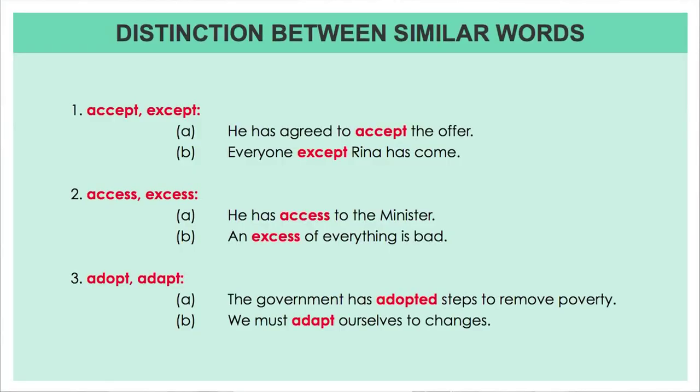Similarly, let us take up another example: 'Access' and 'Excess.' Let us look at the sentence construction. 'He has access to the minister.' Another sentence would be, 'An excess of everything is bad.' So, now you see the difference?